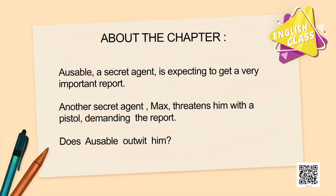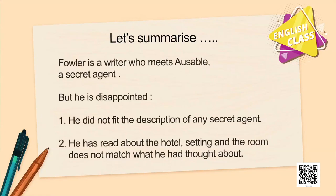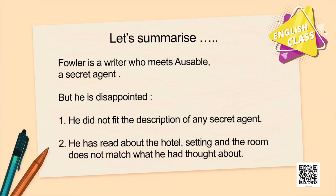The chapter is about Ossible, a secret agent who is expecting a very important report. Max, another secret agent, comes and demands the report from him. Would Ossible be able to outwit him? Let us see. Fowler is a writer who meets Ossible, a secret agent, but he is very disappointed — first, because Ossible does not meet any physical requirement of a secret agent, and second, the hotel room also does not meet his expectations. Ossible reassures Fowler and says he will soon see a very important paper for which many people have risked their lives.